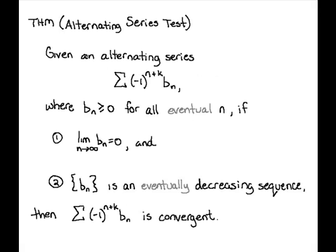In this video we're going to state the alternating series test and then prove it, along with talking about some lemmas required for the proof. Given an alternating series of the form negative one to the n plus k times b sub n, where all the b sub n's are non-negative for all eventual n: if the limit as n goes to infinity of b sub n equals zero, and if the sequence of b sub n's is eventually decreasing, then the alternating series is convergent.